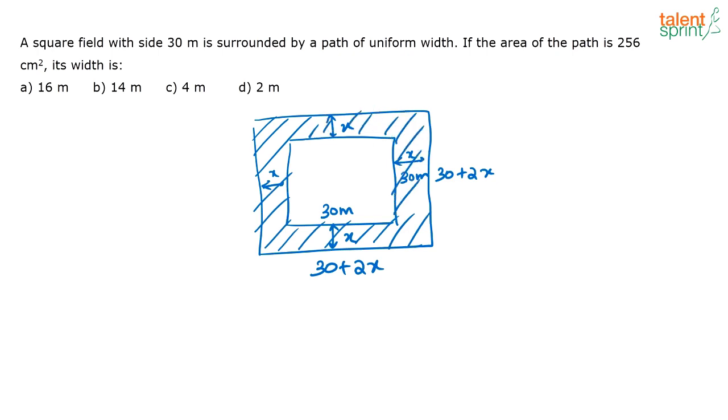Now actually how do you find out the region of the shaded area? It is nothing but the area of the outer square minus the area of the inner square. That is nothing but (30 plus 2x) whole squared minus 30 squared. That is the area of the shaded region.